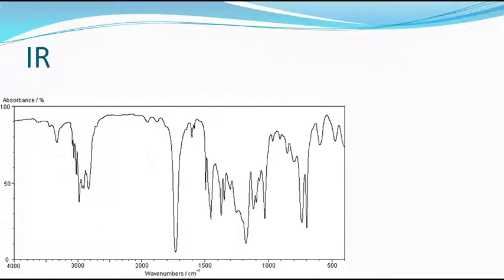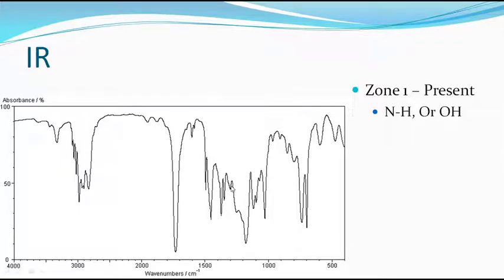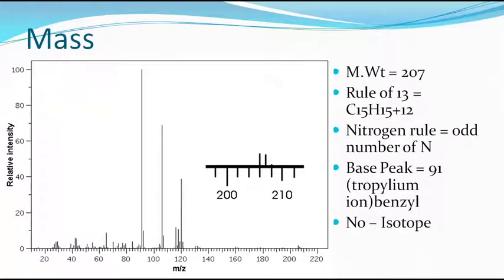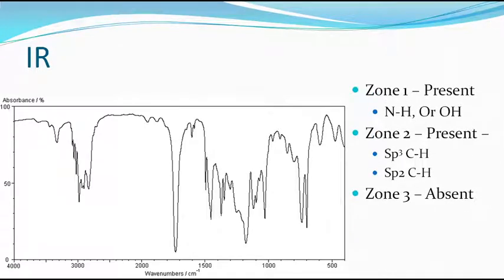If you look at the IR spectra, zone one is present — either it has to be amine or amide, NH. It is a typical NH stretching, not OH. Zone 2 is also present. This is the 3000 mark, and both above 3000 and below 3000 are present. Therefore, both SP3 CH stretching and SP2 CH stretching are there in the molecule — meaning there is an aliphatic part and an aromatic part. Since we have already seen a benzyl group in the mass spectra, there will definitely be an aromatic part and an aliphatic part, as the SP3 CH stretching confirms.